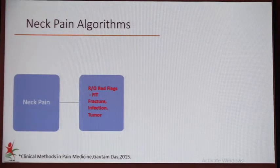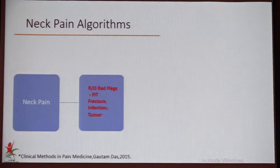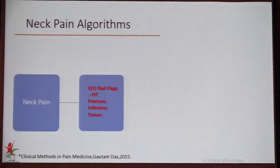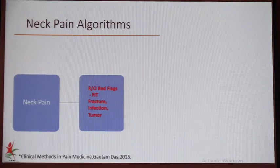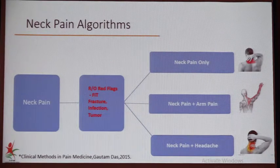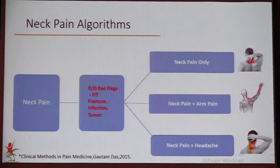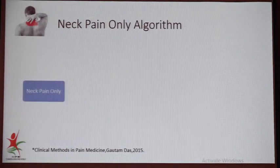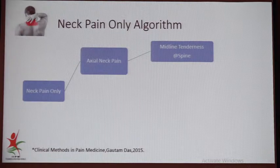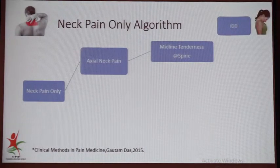After examination, we go through the neck pain diagnostic algorithm — how to differentiate neck pain and arrive at a reasonably possible clinical diagnosis. For any neck pain, first rule out red flags: FIT — fracture, infection, tumor — which require referral or different management. For axial neck pain only: midline tenderness with pain increased on flexion suggests internal disc disruption; increased pain on neck extension suggests bilateral facet involvement; interspinous tenderness suggests interspinous ligament injury; paramedian tenderness suggests facet joints; and localized tender points over a muscle suggests myofascial syndrome.